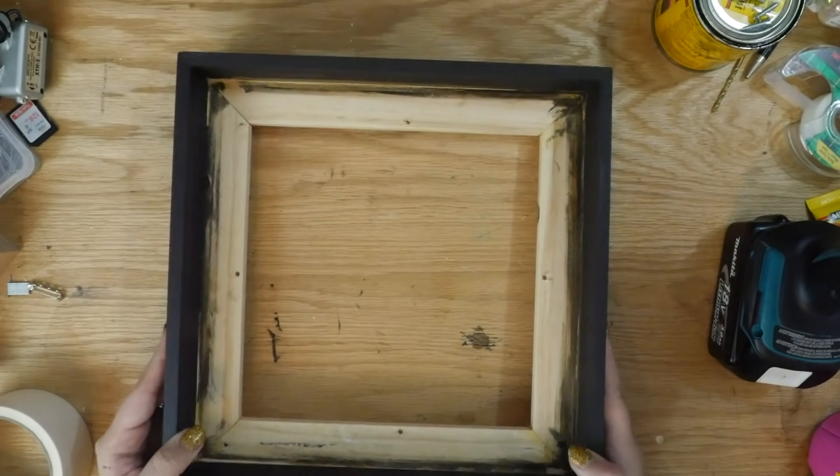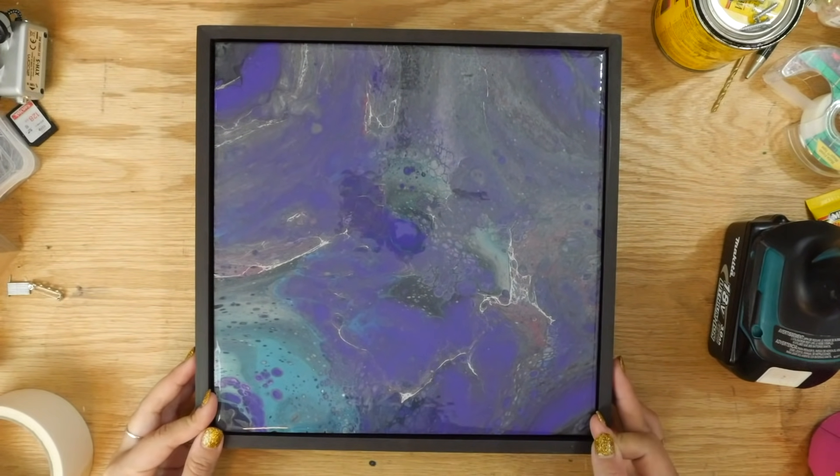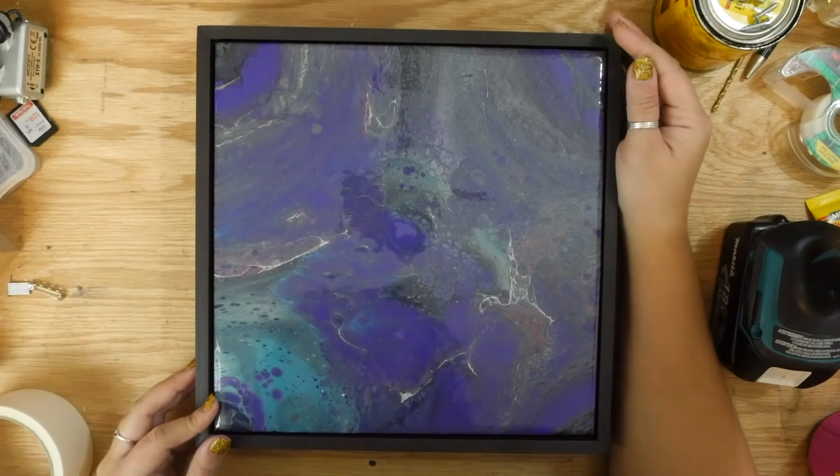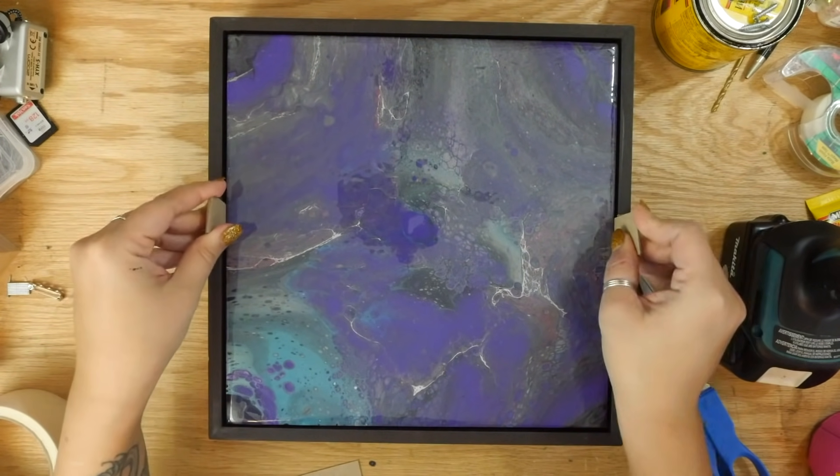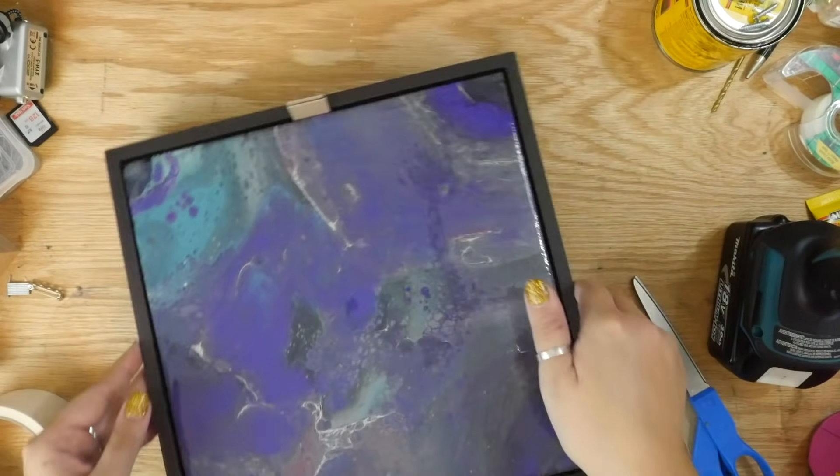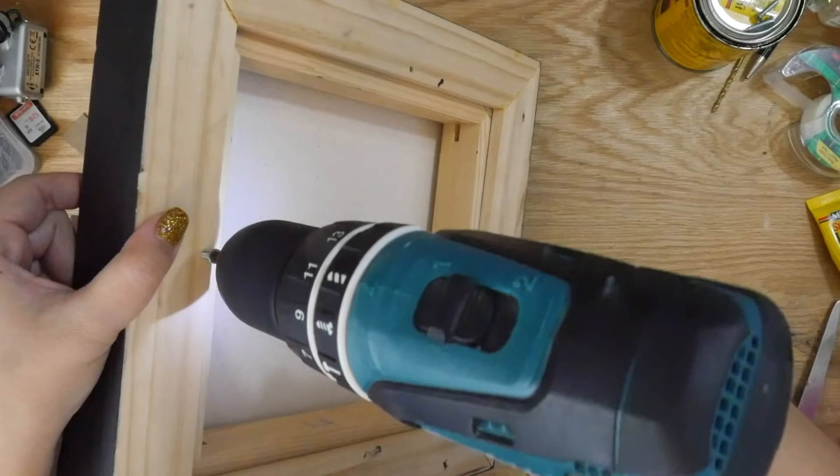Flip the frame back over and place your painting inside, aligning it so it has equal gaps on all sides. You can use some pieces of cardboard or cardstock or something to wedge in between the painting and the frame to keep the painting from shifting around. And then flip it over and screw the painting in.